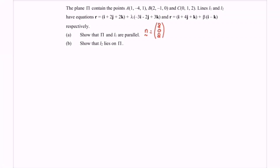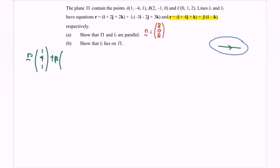Continuing to part B: show that line L2 lies on the plane. The equation of line L2 in vector form is R = (1, 4, 1) + β(1, 0, -1). Expressing this in parametric form: x = 1 + β, y = 4, z = 1 − β.